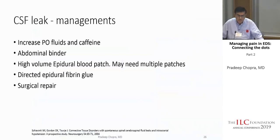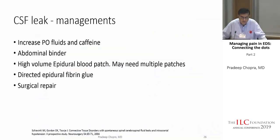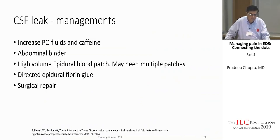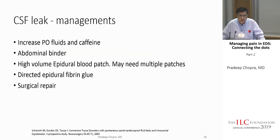To manage CSF leak headaches: increase oral fluids, take caffeine — pills, coffee, tea — even IV caffeine is given. An abdominal binder or corset increases CSF pressure. If all else fails, they do a high-volume epidural blood patch. People with EDS often need multiple patches. If that doesn't work, they do a directed epidural fibrin glue — essentially a super glue injected to close the leak. Patients who've had spine surgery with CSF leak may have a dural flap repair.